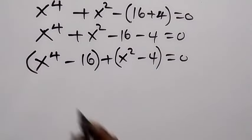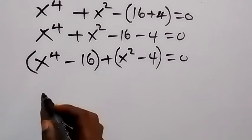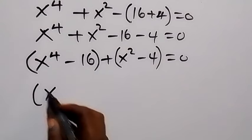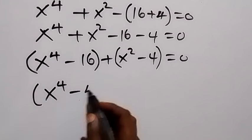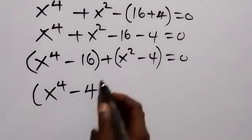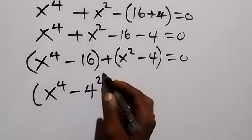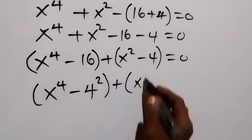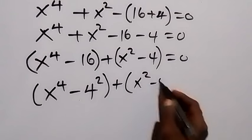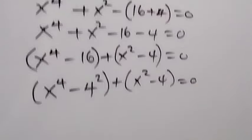From the first bracket, we can write 16 as 4 raised to power 2. So we have x raised to power 4 minus 4 squared, and then plus x squared minus 4, which equals to zero.